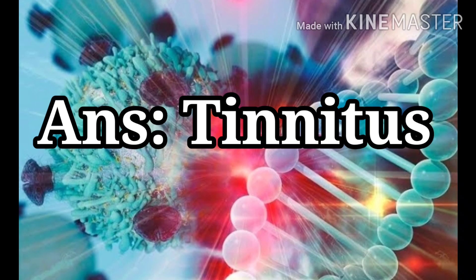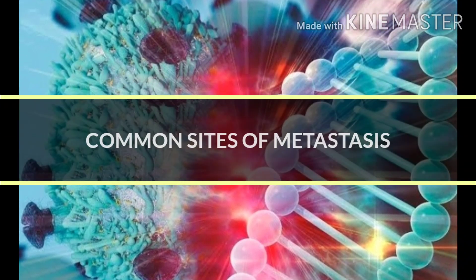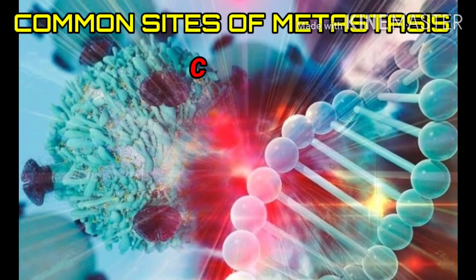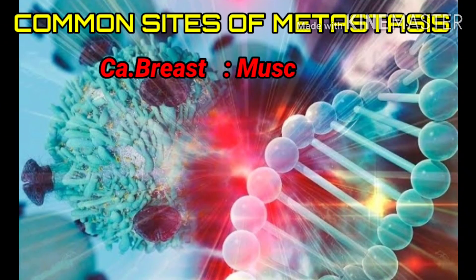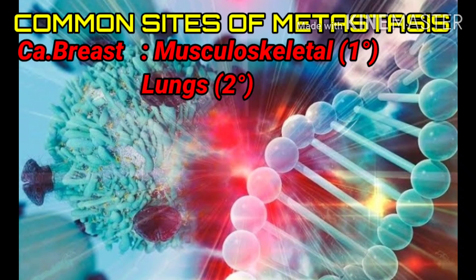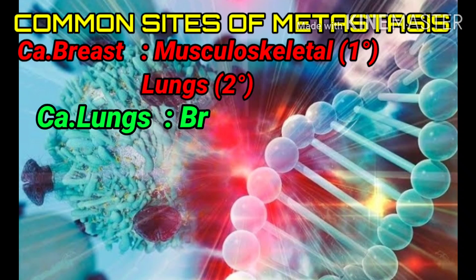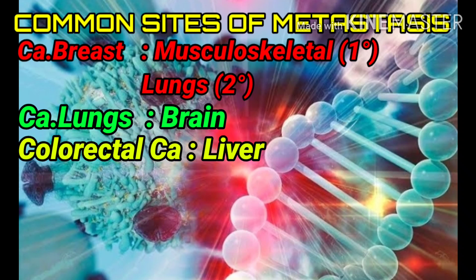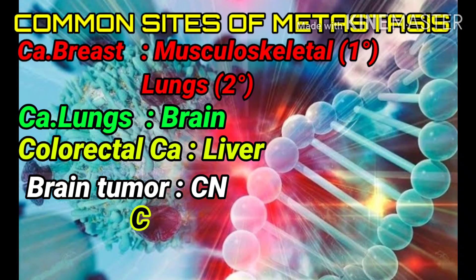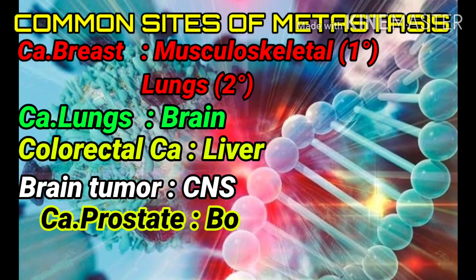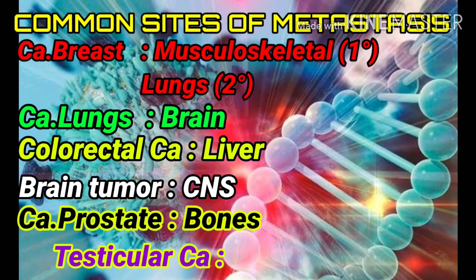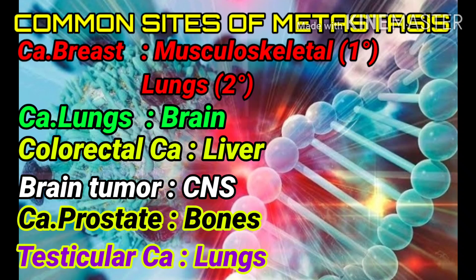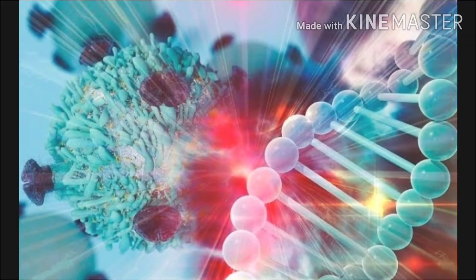Common sites of metastasis in cancer: CA breast — primary site is musculoskeletal, secondary is lungs. CA lungs metastasizes to the brain. Colorectal cancer metastasizes to the liver. Brain tumor to the CNS. CA prostate to bones. Testicular cancer to the lungs.